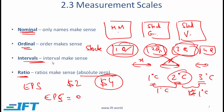Notice that with interval scales, there generally won't be an absolute zero in the meaningful sense. While we do have 0 degrees centigrade, 0 degrees centigrade does not mean the absence of temperature.